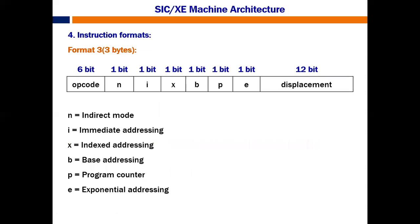Format 3 and format 4 are very, very important. We use these formats in object code generation. Format 3 takes 3 bytes, that is 24 bits. In these 24 bits, the opcode takes 6 bits only — unlike formats 1 and 2 which take 8 bits for the opcode.